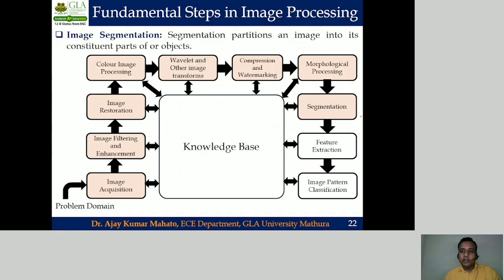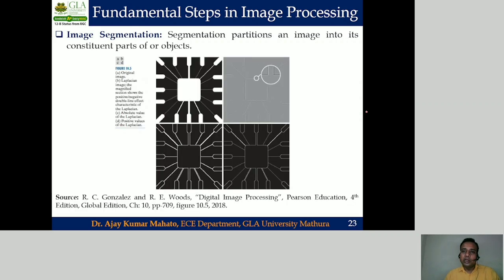The next step of digital image processing is image segmentation. In image segmentation we segment the image — we partition the image into various constituent parts or objects. In image segmentation we perform operations like detection of isolated points, lines, and edges present in the given digital input image. An example from the book shows edge extraction performed on the digital input image shown in figure A.